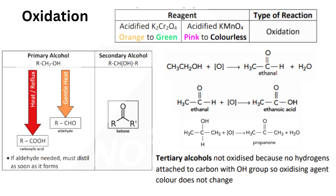The next reaction is oxidation. The reagent used is acidified potassium dichromate, which changes colour from orange to green, and acidified KMnO4, which changes colour from pink to colourless. Primary alcohols on oxidation give a carboxylic acid and an aldehyde. If you need aldehyde, you must distill it as soon as it forms — aldehyde can be obtained by gentle heat. If you require carboxylic acid, you need to reflux. Ethanol on oxidation gives ethanal; ethanal on oxidation gives ethanoic acid. Secondary alcohols on oxidation give a ketone — shown here, propanone. Tertiary alcohols are not oxidized because no hydrogen is attached to the carbon with the OH group, so the oxidizing agent colour does not change.